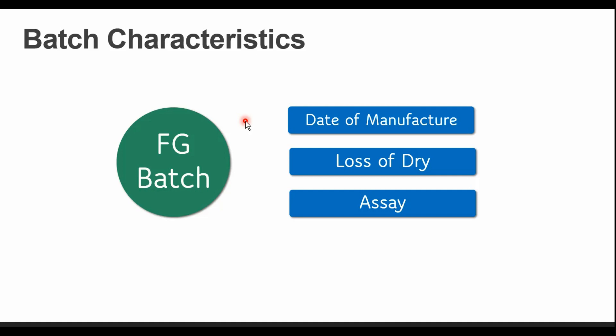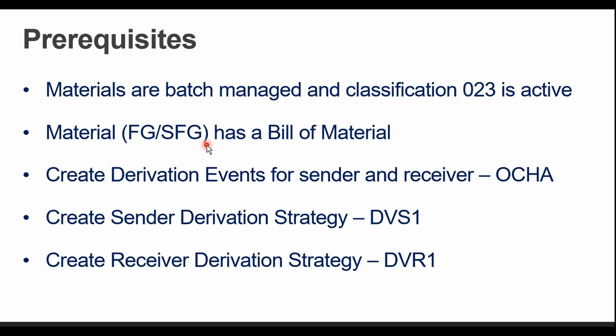Once we activate batch derivation, the characteristics of the material selected in the configuration or master data get updated into the finished product batch automatically. We are reducing user intervention and cutting off the entire process of manual updates of batch characteristics into the finished product. Let's have a look at the prerequisites.